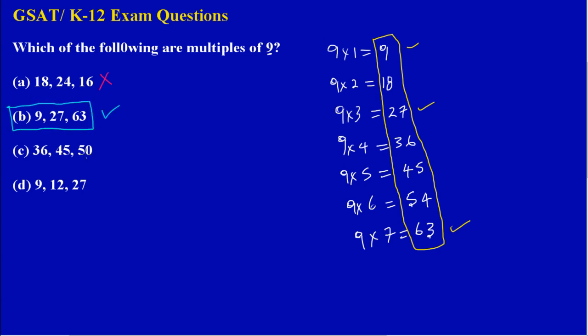Now when you look, 50 is not a multiple, 50 is not there. So we would have to eliminate these, and we would have to eliminate C and D.